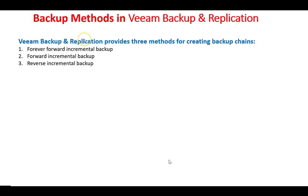Veeam Backup and Replication provides three methods for creating a backup chain. The three methods available are: forever forward incremental backup, forward incremental backup, and reverse incremental backup. Now let's look at each one — what they are and how they work.